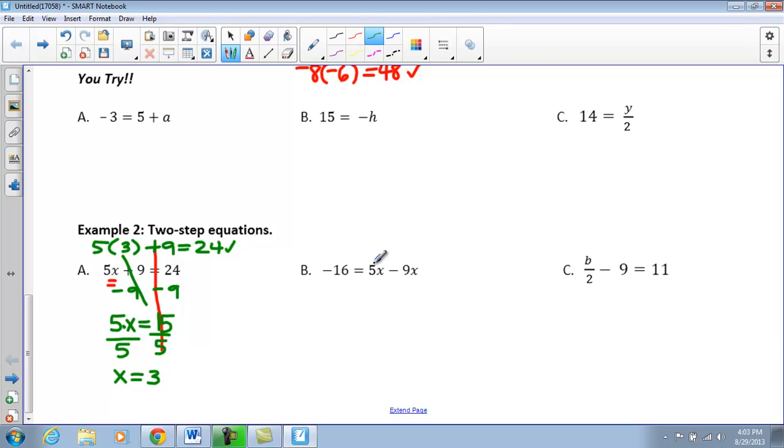The next thing, this goes back to that first step that we had above where we have to combine like terms, right? We have the same variable raised to the same power. So I'm going to take 5x minus 9x, so I have negative 16 equals a negative 4x. The next thing I'm going to do is I'm going to divide both sides by negative 4. So I have x is equal to 4.